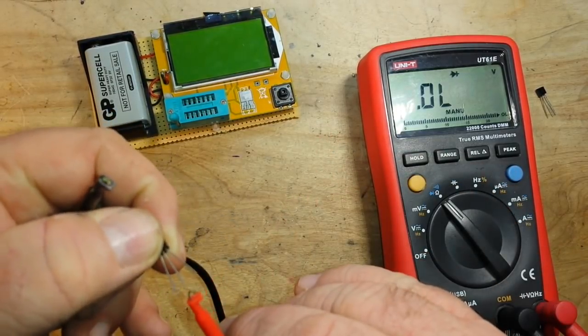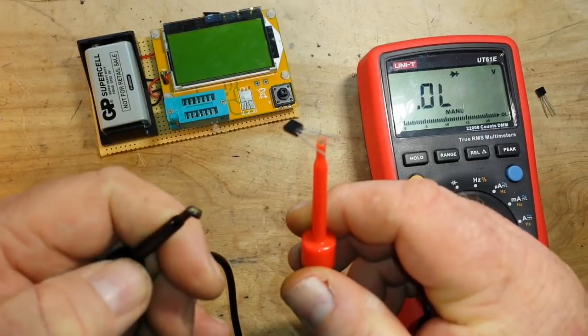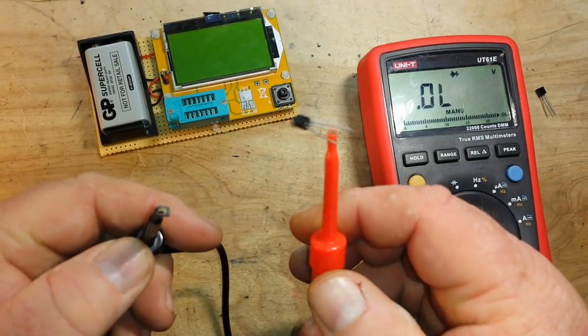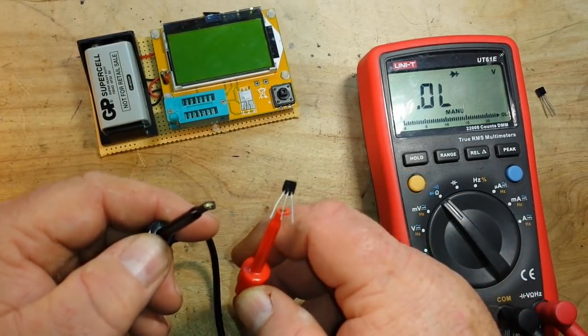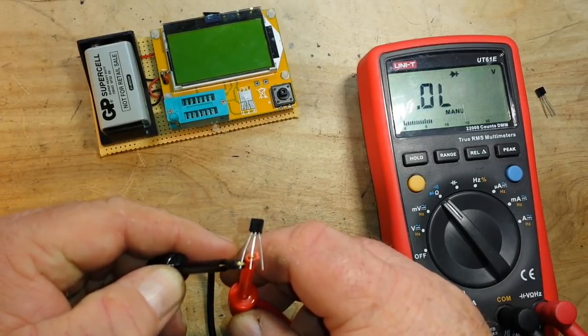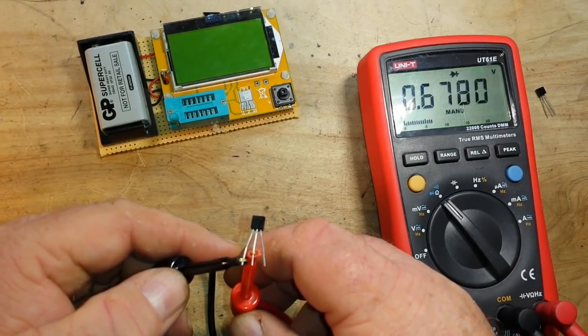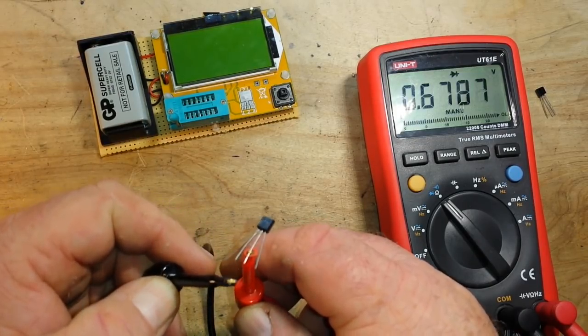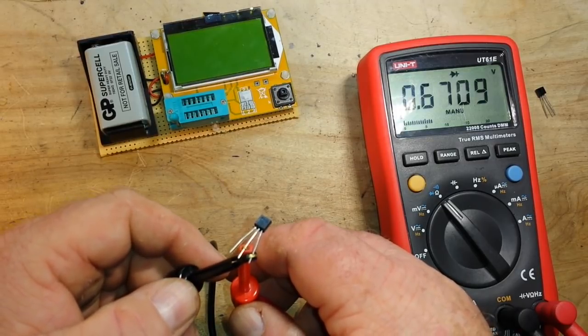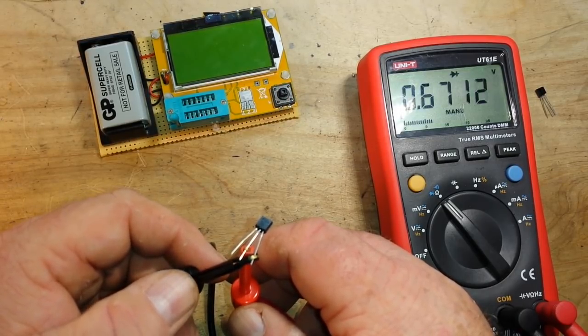That, again, the middle pin is common to both. So, that's the base. Now, we just need to see which one is stronger. 0.678. 0.671.